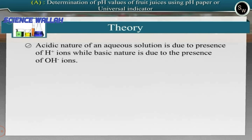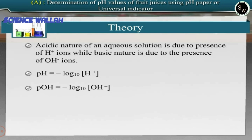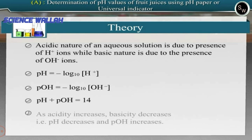Theory: The acidic nature of an aqueous solution is due to the presence of hydrogen ions, while basic nature is due to the presence of hydroxyl ions. pH is defined as the negative logarithm to the base 10 of hydrogen ion concentration. pOH is defined as the negative logarithm to the base 10 of hydroxyl ion concentration. pH plus pOH is equal to 14.